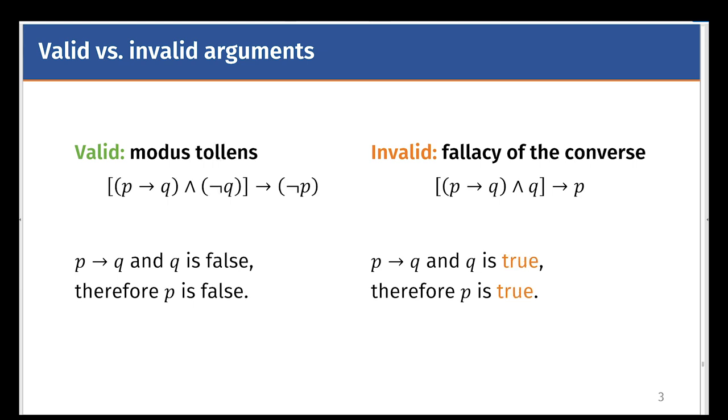We can compare the fallacy of the converse with the valid statement modus tollens. Modus tollens is valid. When you're given the conditional if P then Q, then it is legal to reject Q in order to reject P.